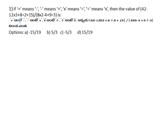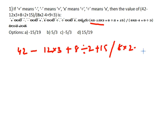Let's talk about the equation: 42 minus 12 into 3 plus 8 divides 2 plus 15 divided by 18 into 2 minus 4 plus 9 divides 3.